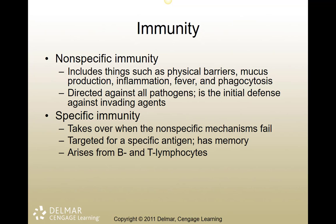Specific immunity occurs when you have an actual antibody or a B cell producing antibodies against a specific antigen, or a T cell that will attack or put cytokines on a specific antigen. This is specific to whatever the foreign invader is — be it a virus, bacteria, or allergen. There will be a part of the immune system set up with antibodies and cells specifically to attack that antigen. Vaccination takes advantage of this specific immunity.